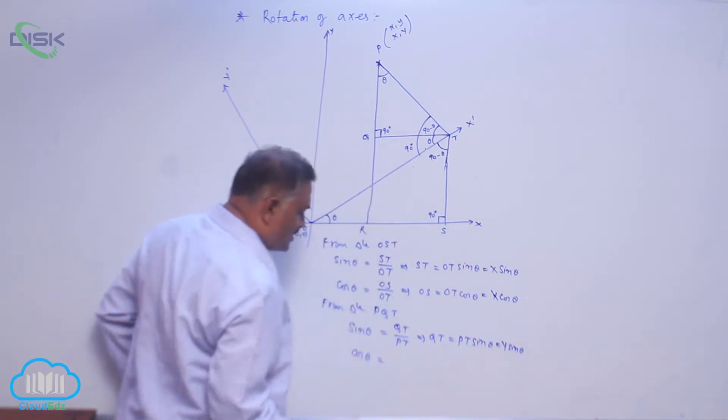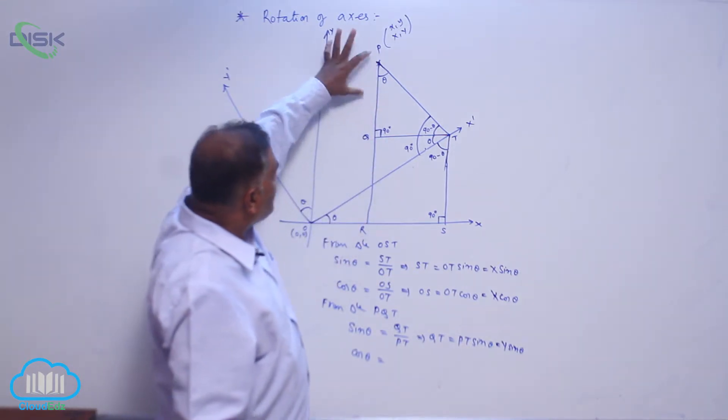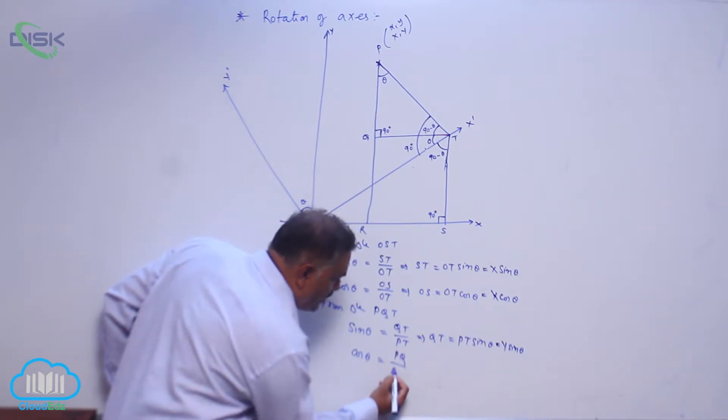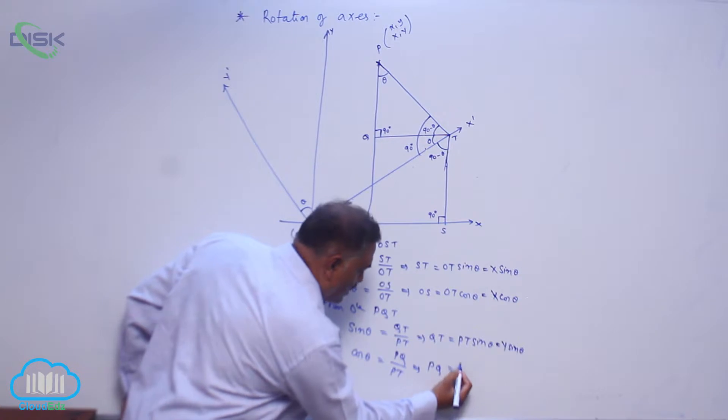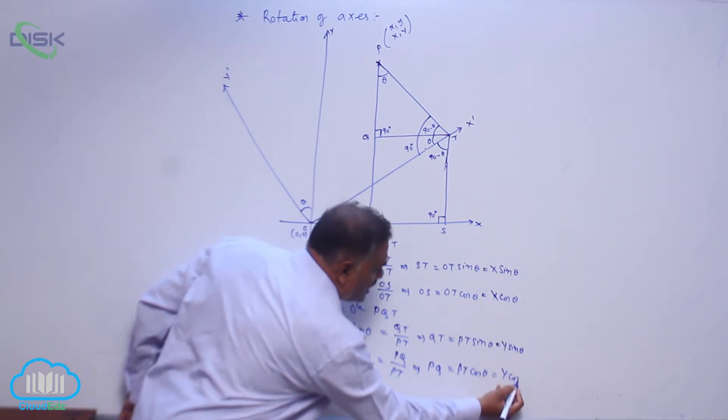Then comes cos theta, which is nothing but PQ divided by PT. This is PQ equals PT cos theta, that is Y cos theta.